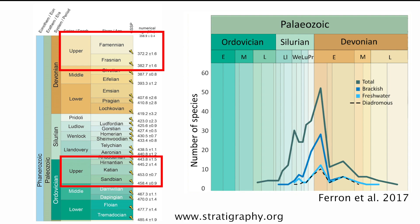After their origination in the late Ordovician, thelodonts diversified quickly during the Silurian and occupied a wide range of environments including marine, brackish and freshwater habitats.